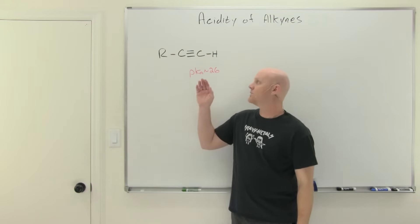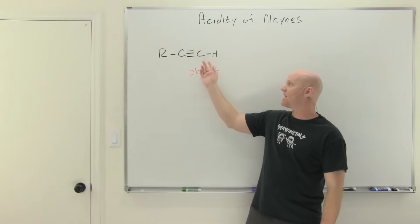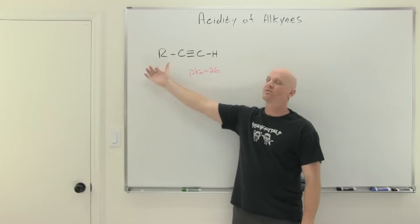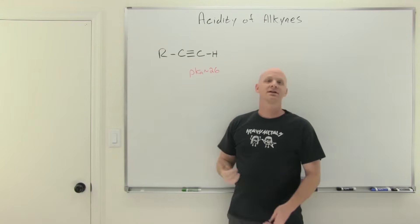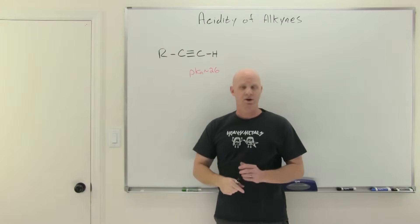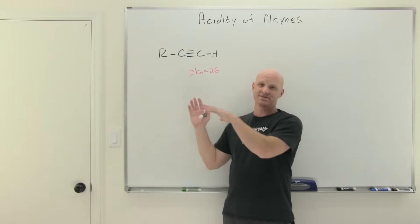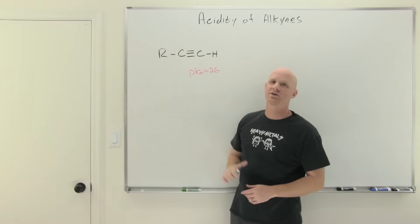All right so the acidity of alkynes. We're going to talk about a terminal alkyne where the carbon-carbon triple bond comes at the end of a molecule. So it's this hydrogen here that's attached to an sp hybridized carbon that is going to be of relevance here. We're not really going to address internal alkynes in this part, it's just the terminal alkynes are going to have some relevance here.